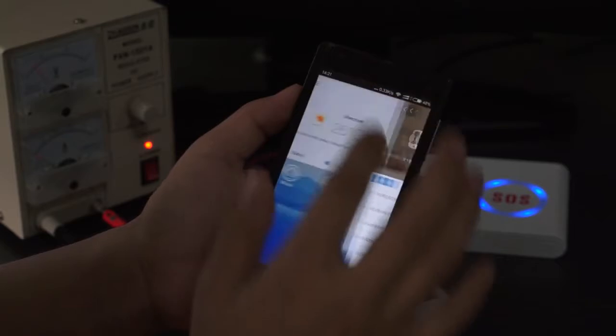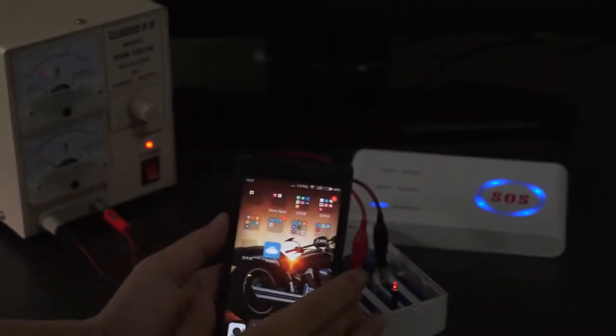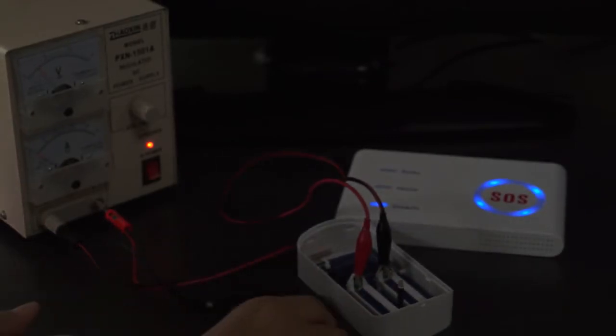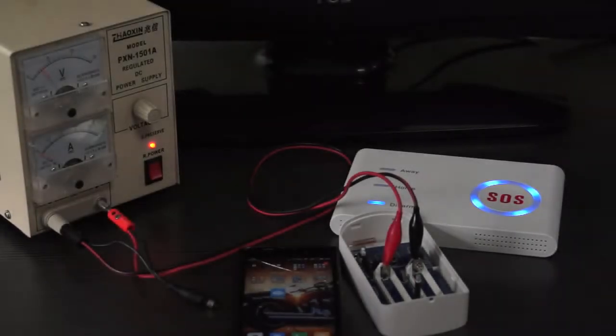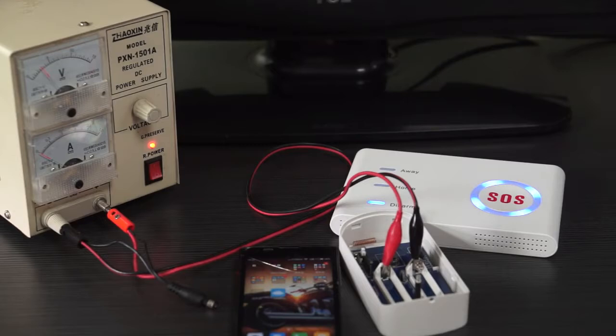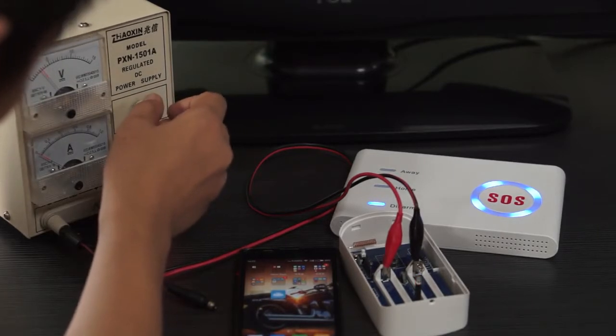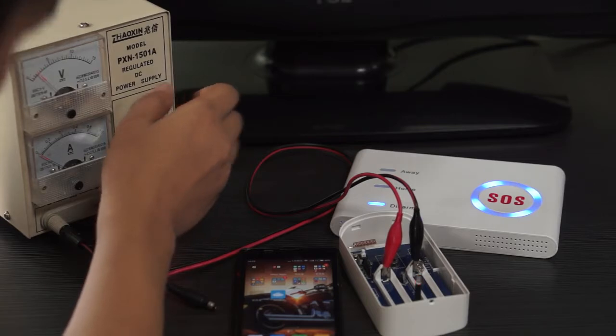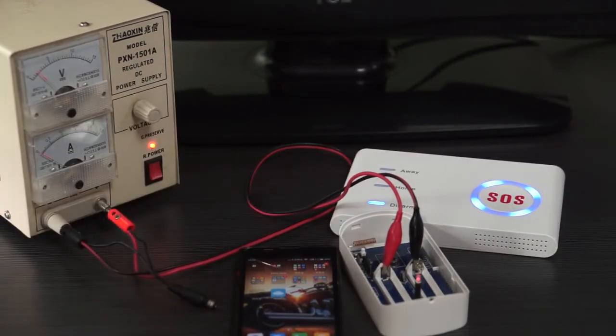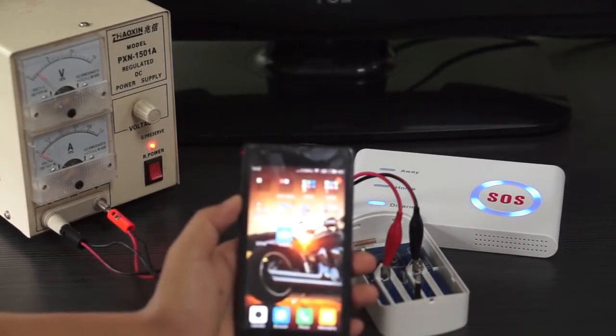And with this, we close the app. The next step, I'm going to reduce the voltage. Adjust voltage to 2, slowly. Now I have adjusted voltage to 2, to see if we can receive the notification.